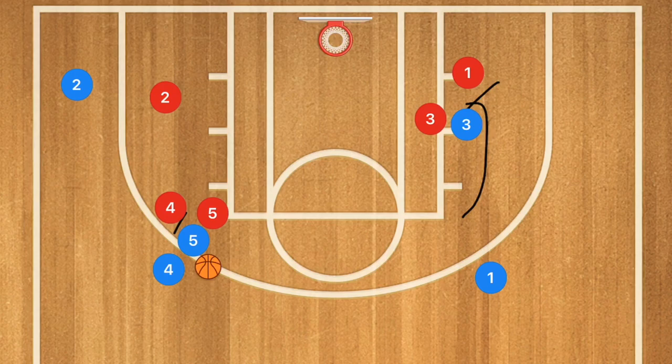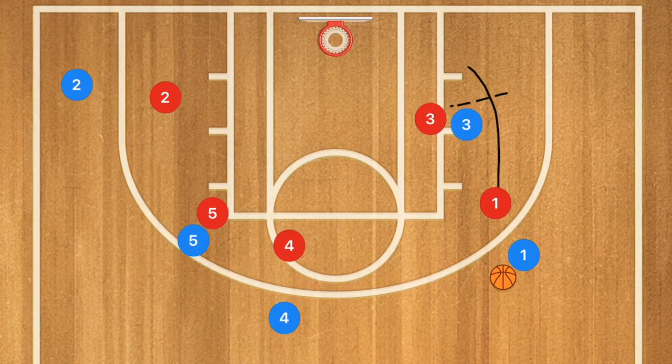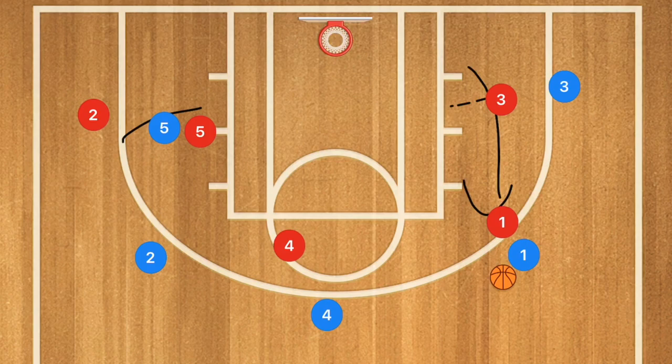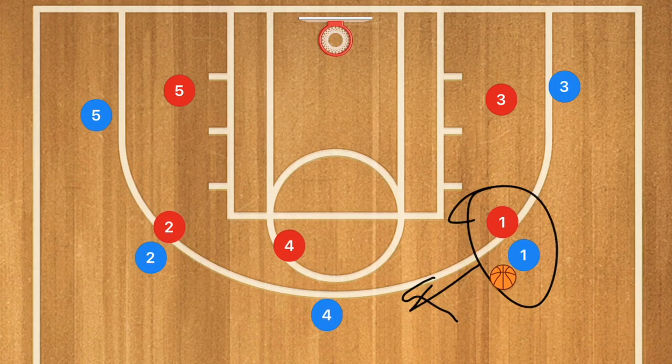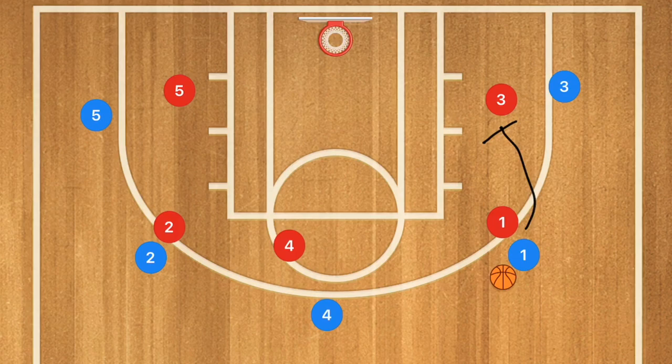Now, let's say we screen down and player one gets open with the ball. By that time, player three is out towards the perimeter. Player five screens away like normal. We're going to start the play over again, but now player one is going to do a dribble handoff with either player four or player three — same idea as before.